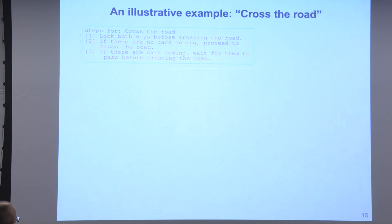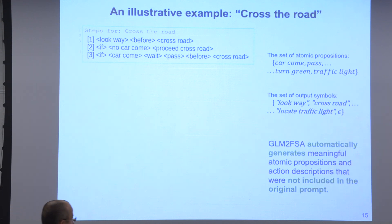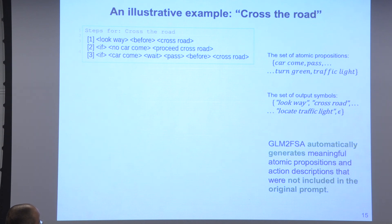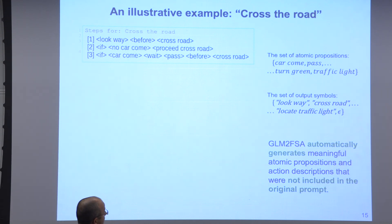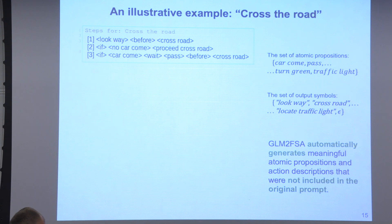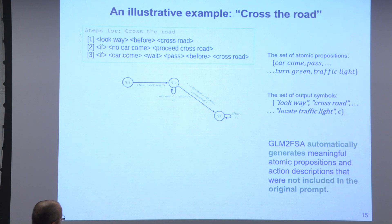In the cross-the-road example, the language model gives three steps. One really useful outcome is that you don't have to start with a large set of atomic propositions — from the language model outputs, you can read out which features or atomic sentences are most relevant for the task at hand. We can read out output symbols and atomic propositions, then step-by-step build the finite state object that acts as a controller.